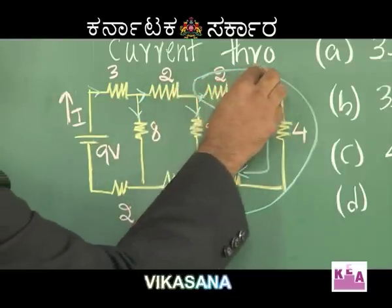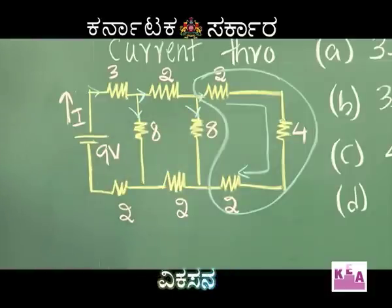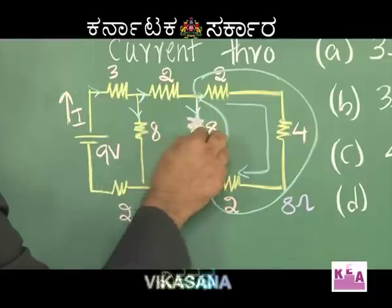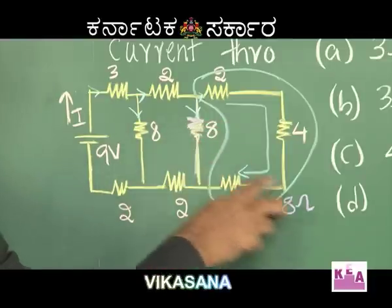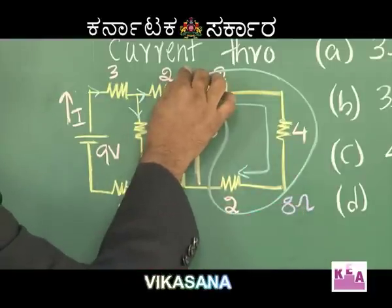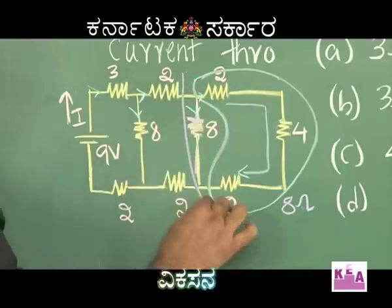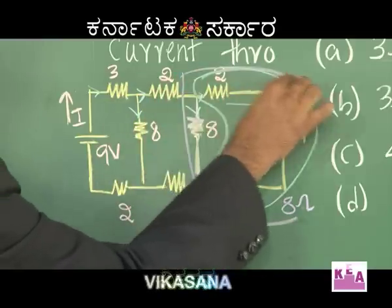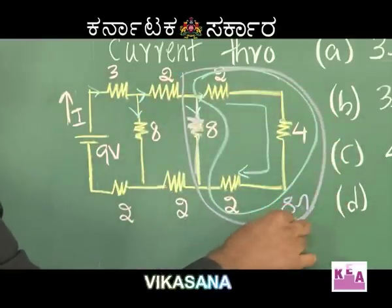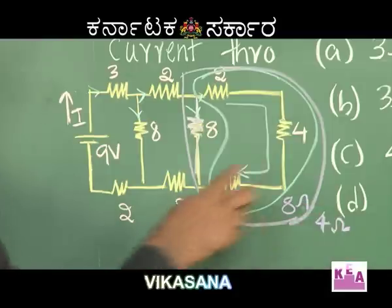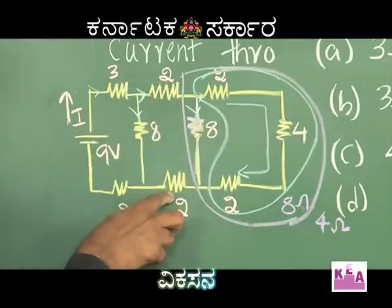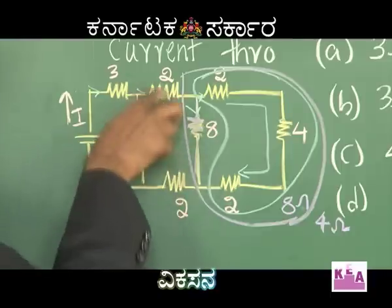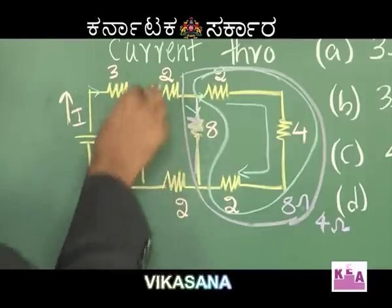This equivalent is 8 ohm. This 8 ohm is in parallel with this 8 ohm. What is 8 parallel 8? 8 parallel 8 will definitely give us 4 ohm. This 4 ohm plus 2 plus 2 — because here it is coming across 4 ohm — this 4 plus 2 plus 2 will give us 8 ohm.